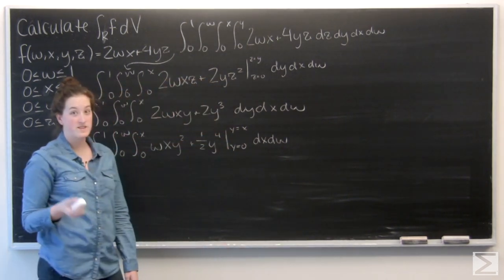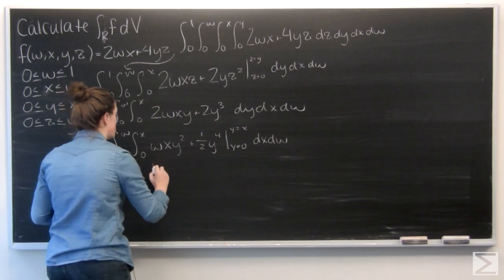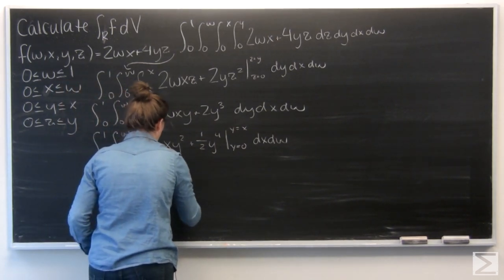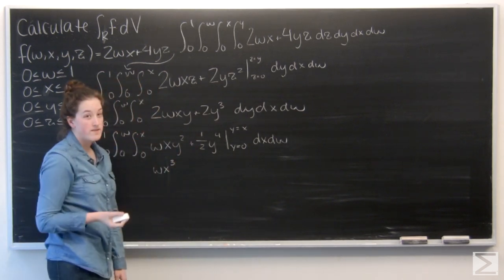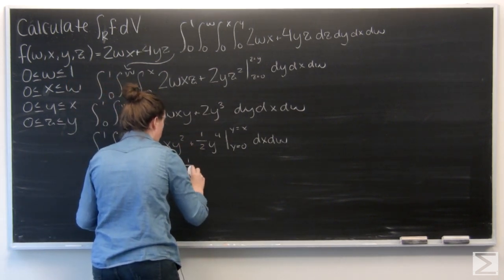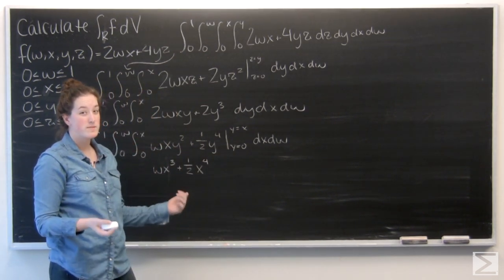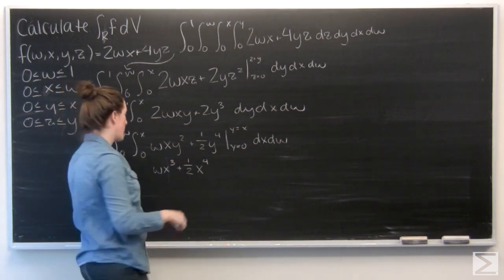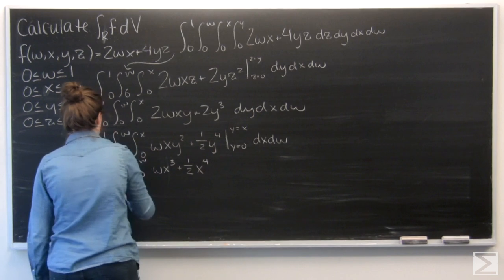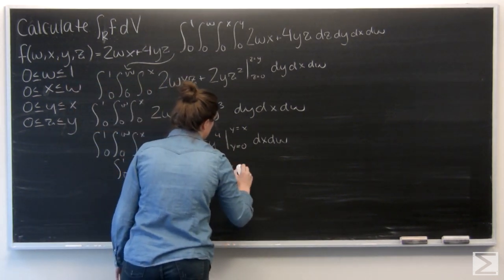So first up I plug an x in everywhere that I see a y. So wx to the third plus 1 half x to the fourth. Now for y equals 0, both of these terms become 0, so I don't even have anything to subtract. Add everything else in.